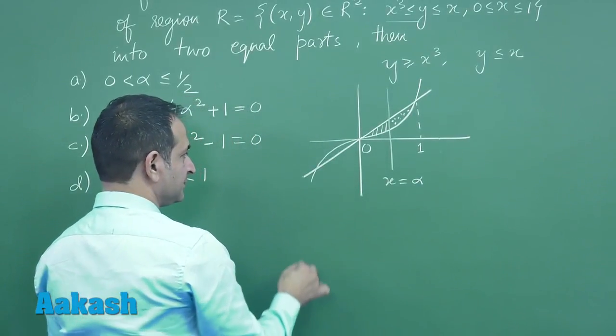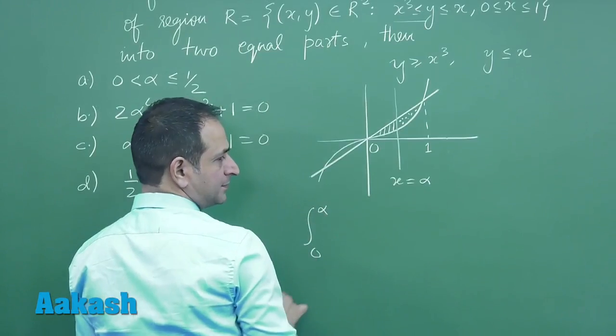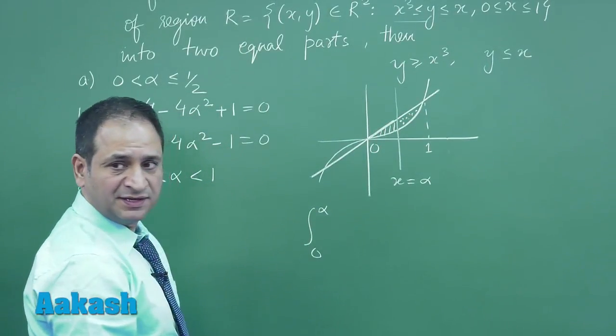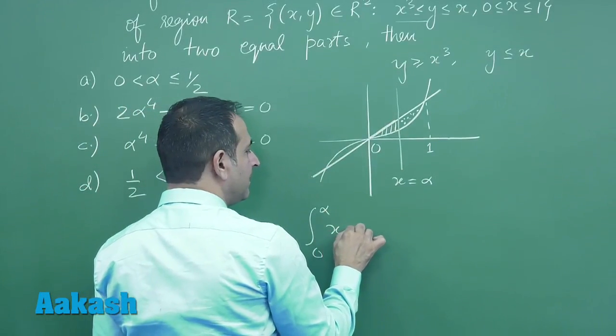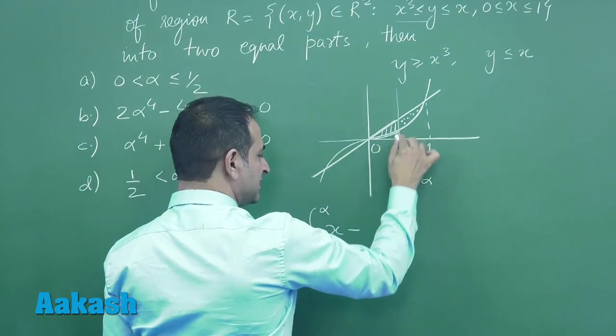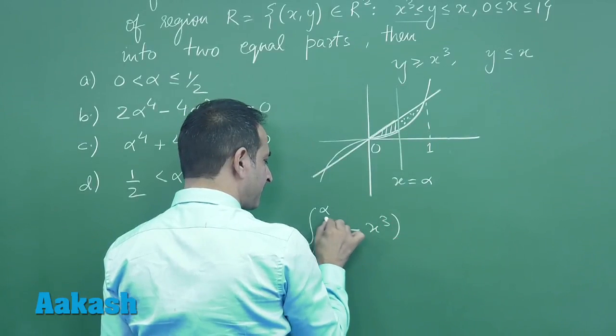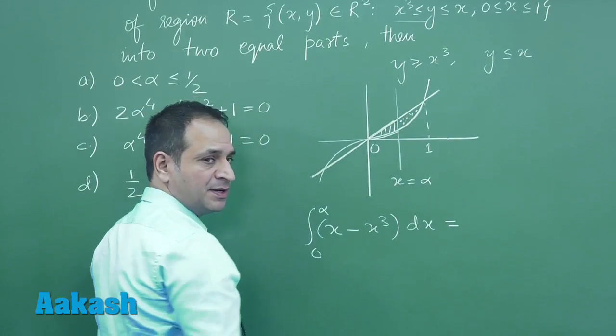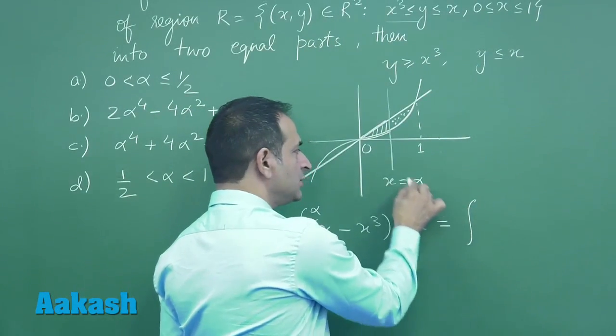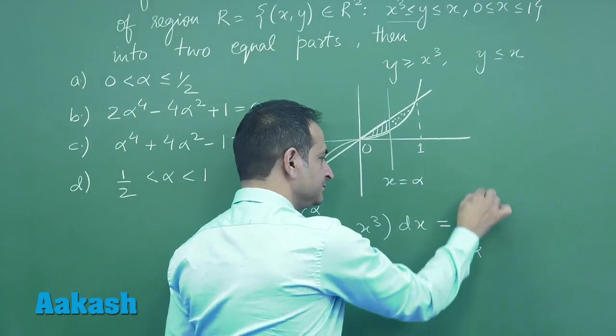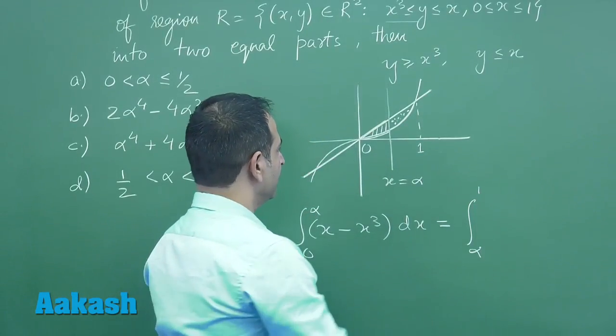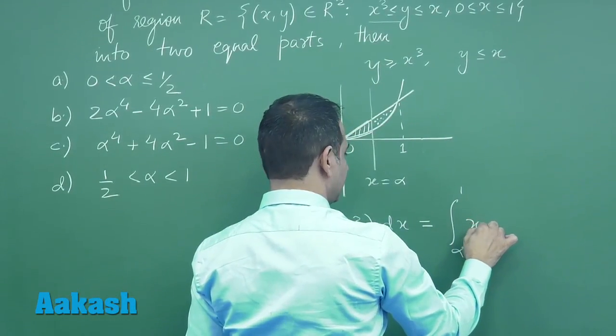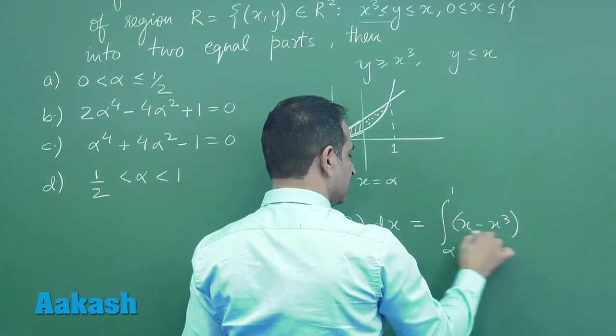So it is given 0 to α, this is the upper curve. The upper curve is definitely y = x. So it is upper minus lower curve. The lower curve is x³, so ∫(x - x³)dx. This is equal to the next part which is bounded between α to 1, so here again it is ∫(x - x³)dx.